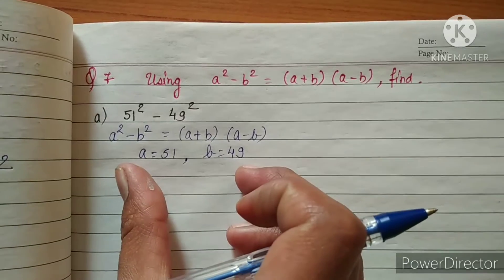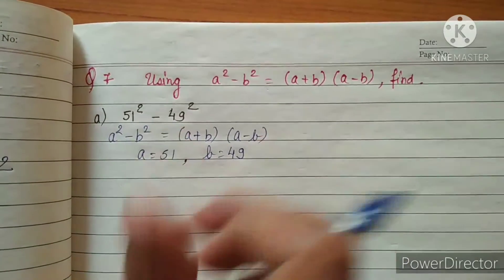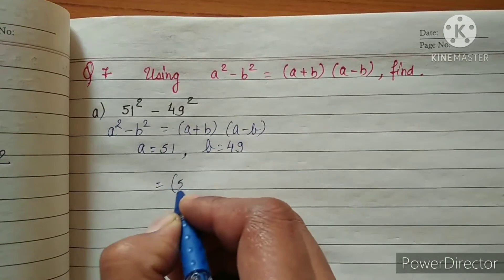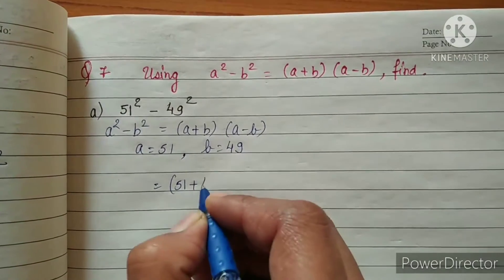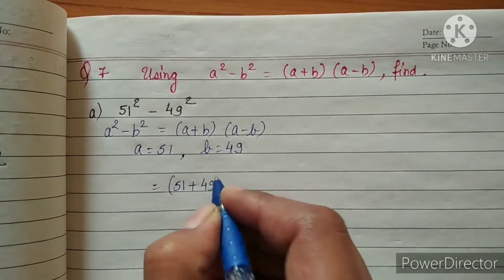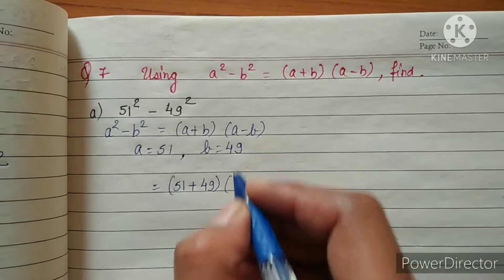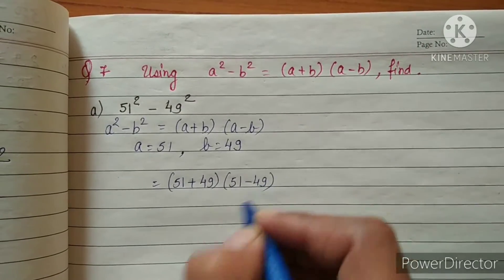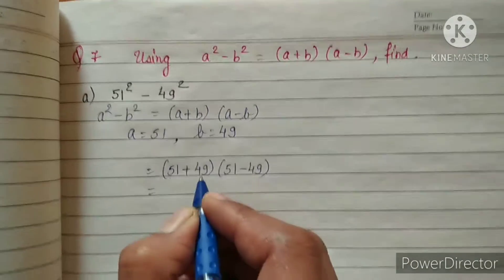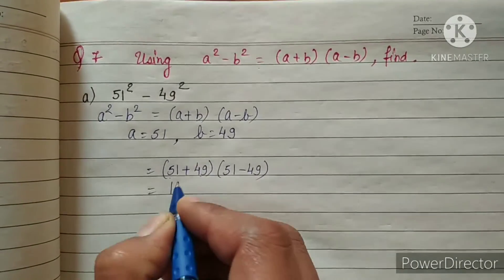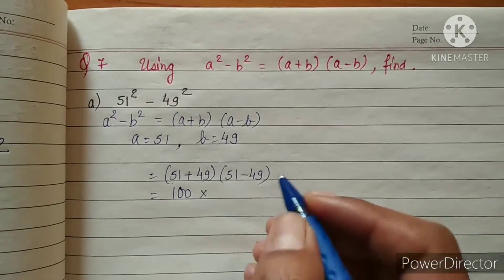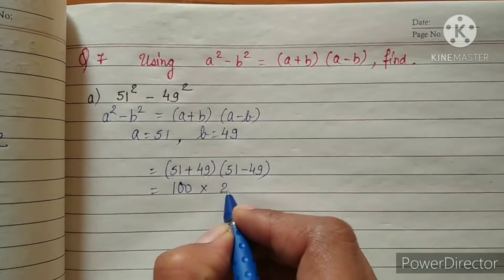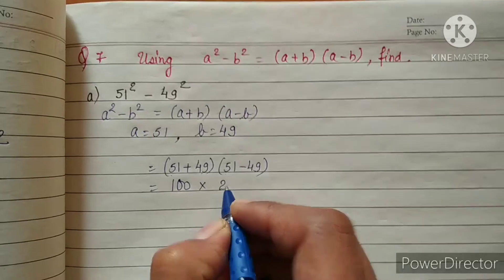Putting these two values inside the identity: a is 51 plus 49 multiplied by 51 minus 49. 51 plus 49 is 100, multiplied by 51 minus 49 which is 2. 100 multiplied by 2 is 200.